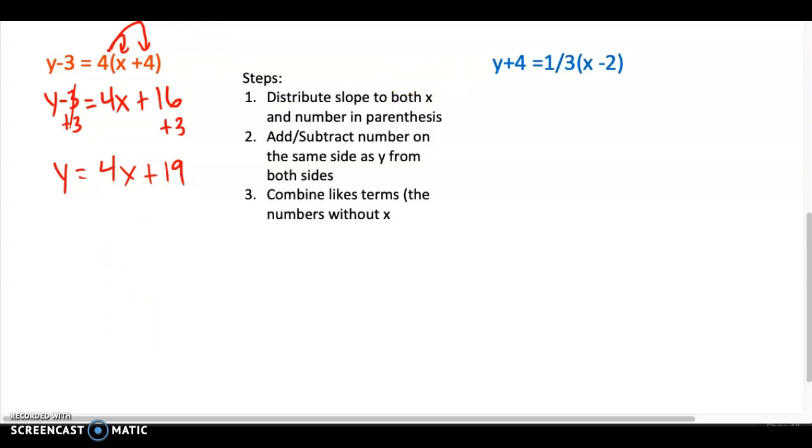This one in the blue here, not so much. So we already combined our like terms. We did step 3 right here. And we did 16 plus 3. So we kind of mix it in together. And then in the next one, we'll kind of do it as a separate step because you'll see. So first thing I got to do is distribute the slope to both the x and the number. So I multiply the 1/3 to the x and then the 1/3 to the negative 2. A lot of people make that mistake. They don't include the negative.